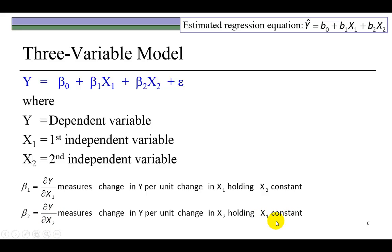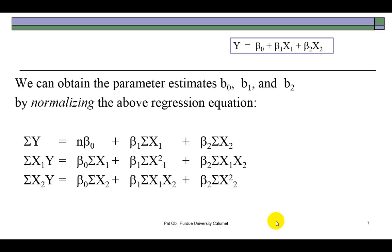So how do we obtain these parameters? Well, one important way is to use the matrix approach. And we begin by normalizing this regression equation, which is first summing both sides of the equation, and then pre-multiplying each of the arguments by each of the independent variables. So first by X₁, as you can see, and then by X₂.